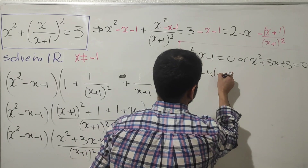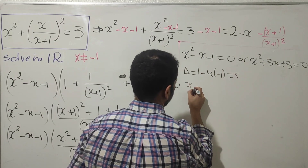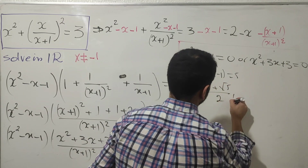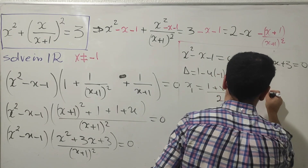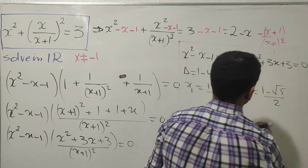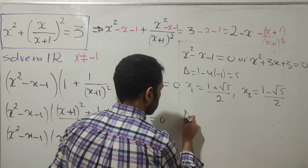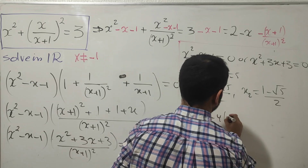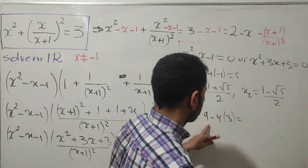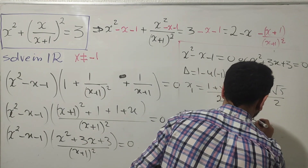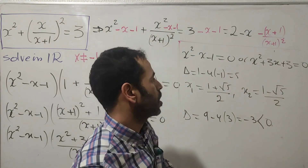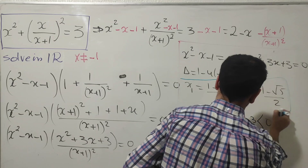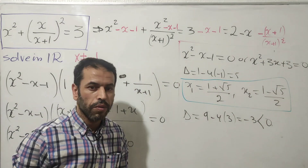Solving x squared minus x minus one equals zero using the discriminant: delta equals one minus four times minus one, which equals five. So x₁ equals (one plus square root of five) over two, and x₂ equals (one minus square root of five) over two. For x squared plus three x plus three equals zero, delta equals nine minus four times three, which is nine minus twelve, giving minus three. Since delta is negative, this equation has no real solutions. Therefore, the only real solutions are the two values from the first equation.